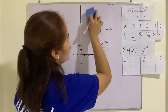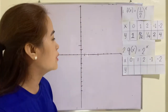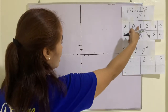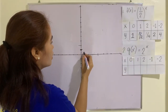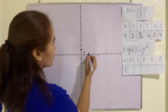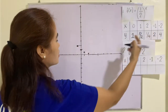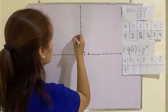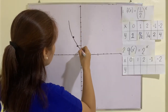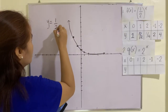You are now ready to plot these points on the rectangular coordinate system. Let's plot the point (0, 1), then (1, 1/2), then (2, 1/4), then negative 1, 2, and negative 2, 4. So this is the graph of y equals 1/2 raised to x — connect the dots to form the curve.